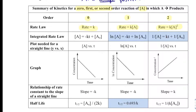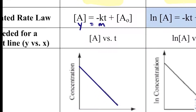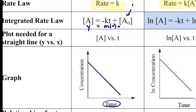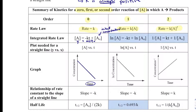If it's a zero order reaction, that gives us a graph that is nice and linear, and that means we can have a y = mx + b equation, where the concentration y is equal to some slope m. Our x-axis is time, and our y-intercept is A-naught, which stands for our initial concentration — that is where our graph started. A zero order process gives us a nice straight line, which makes the algebra easy.